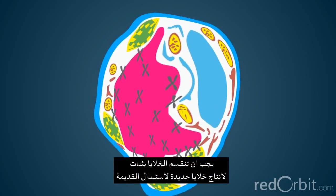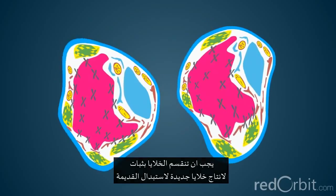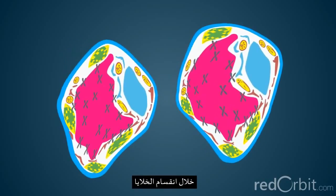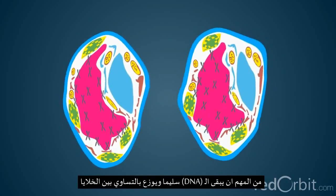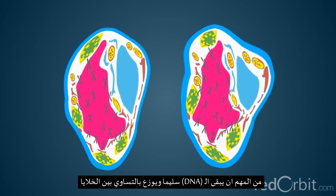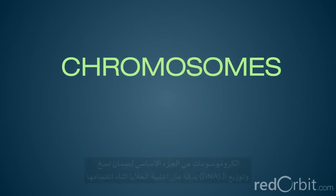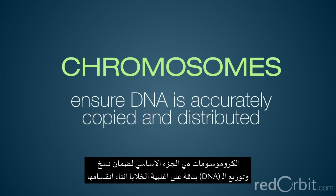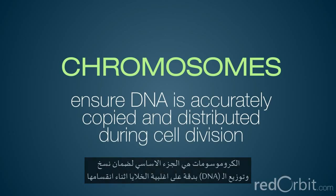For an organism to grow and function properly, cells must constantly divide to produce new cells to replace old, worn-out cells. During cell division, it's essential that DNA remains intact and evenly distributed among cells. Chromosomes are a key part of the process that ensures DNA is accurately copied and distributed in the vast majority of cell divisions.